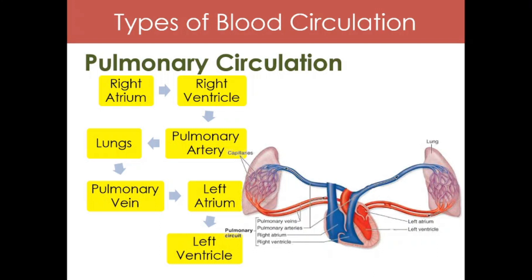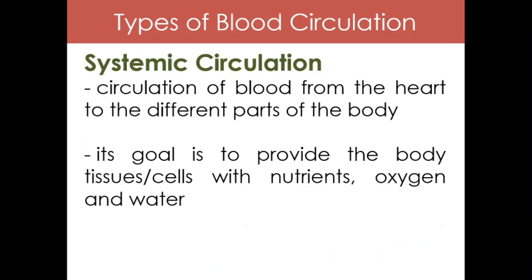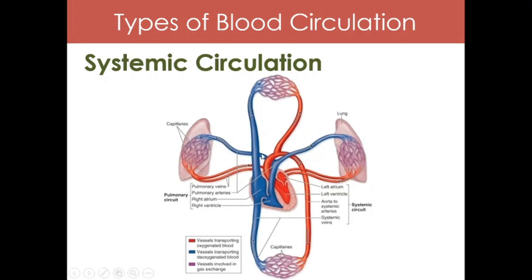The third type of blood circulation is systemic circulation — the circulation of blood from the heart to the different parts of our body. Ito yung circulation matapos mangyari ang pulmonary circulation. The goal of systemic circulation is to provide the body tissues or cells with nutrients, oxygen, and water. Here we can see the combined pulmonary and systemic circulation diagram — the pulmonary portion and the vertical pathway representing the systemic circulation.